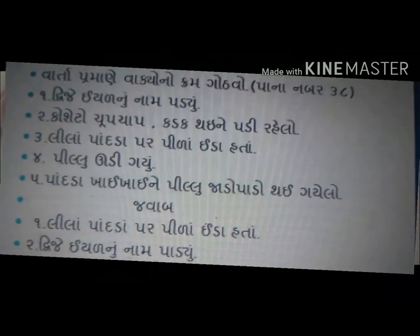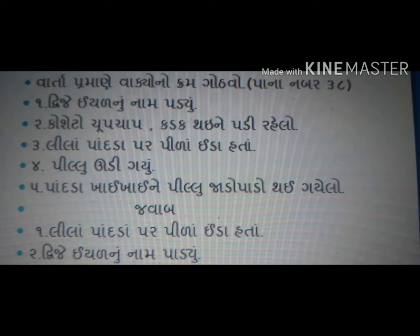પતંગ્યા દર્શાવતું ચિત્ર છે. આ રીતે ચિત્રની સામે તેના નામ આપ્યાં છે. ત્રીજું: 'ચોપ, કડક થઈ ને પડી રહ્યો.' ત્રીજું: 'લીલા પાંદડા પર ઇ.પી.ડા. ઇ.ના. હતા.' ચોથું: 'પિલ્લુ ઊડી ગઈ.' અને પાંચમું: 'પાંદડા ખઈ-ખઈ ને પિલ્લુ જાડું-પાડું થઈ ગઈ.' — આ મિત્રો, આ આટ-આટ-આ વાક્યો આપ્યાં છે, એને આપણે વાર્તામાં આવતા યોગ્ય ક્રમ પ્રમાણે ગોઠવીશું.